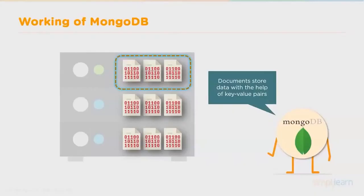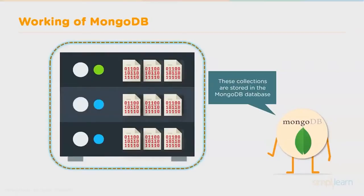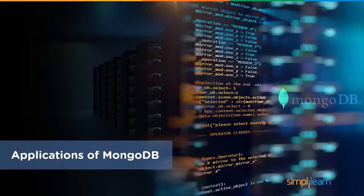Let's look at the working of MongoDB. Data is stored in documents with the help of key-value pairs in the BSON format. At the backend, MongoDB converts JSON data into a binary format known as BSON. MongoDB also makes provision for nested data. All documents are stored in a collection — collections hold multiple documents, and since MongoDB is schema-less, documents in one collection need not be similar. These collections are stored in the entire MongoDB database, and nested data makes fetching extremely efficient compared to other databases.